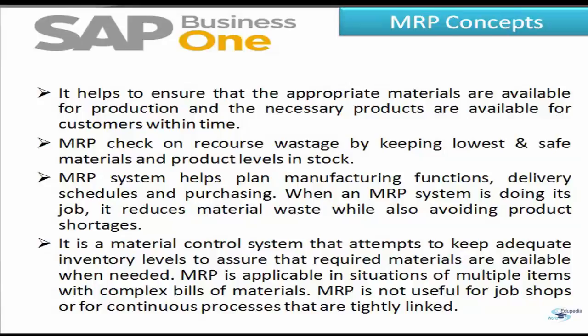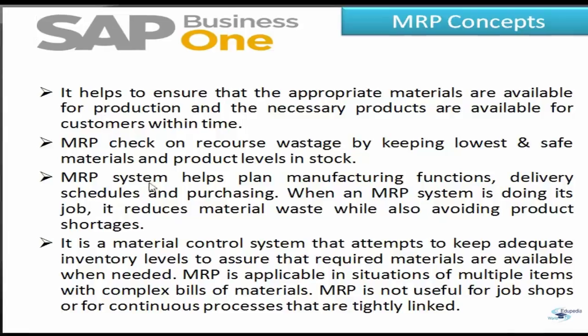Let us quickly see the concepts of MRP. There are three primary functions of an MRP system. In SAP Business One, MRP is a module we will be learning. In general, the MRP system helps to ensure that the appropriate materials are available for production and the necessary products are available for customers to avoid shortages. Secondly, MRP reduces waste by maintaining only the lowest possible material stock levels. Lastly, an MRP system helps in planning manufacturing functions, delivery schedules, and purchasing.